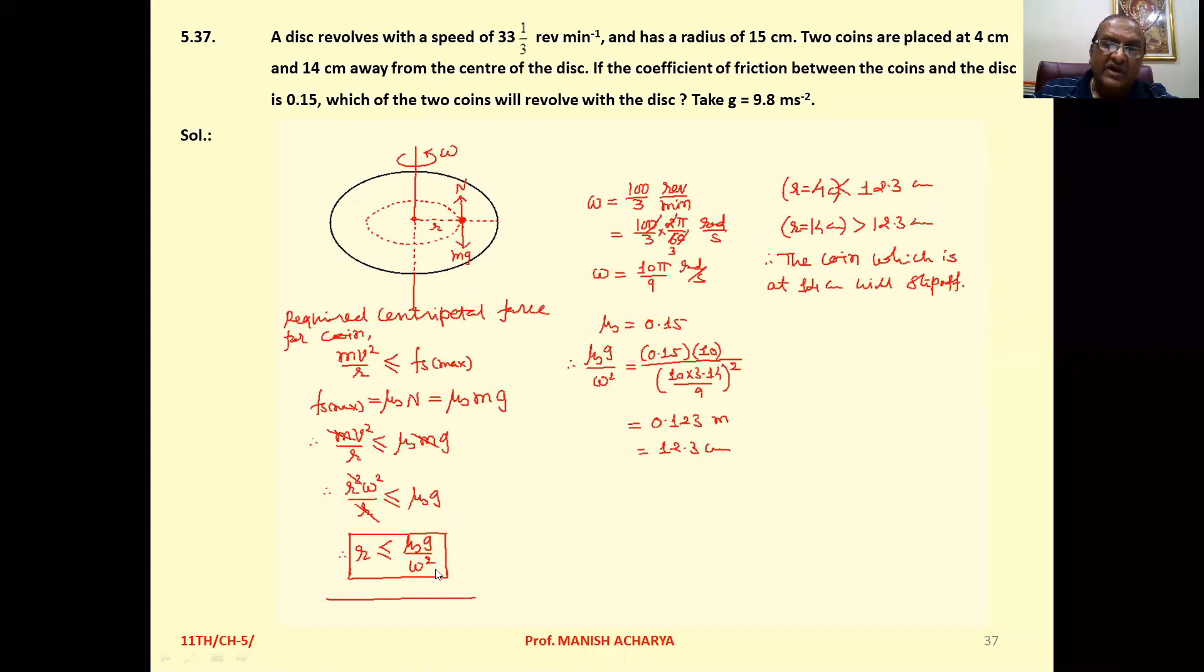Now let's calculate this right hand side. Omega given to you, that is 33 1/3, means that is 100/3 revolutions per minute. One revolution, that is 2π radians. One minute, that is 60 seconds. So 100/3 times 2π/60. So your omega turns to 10π/9 radian per second.